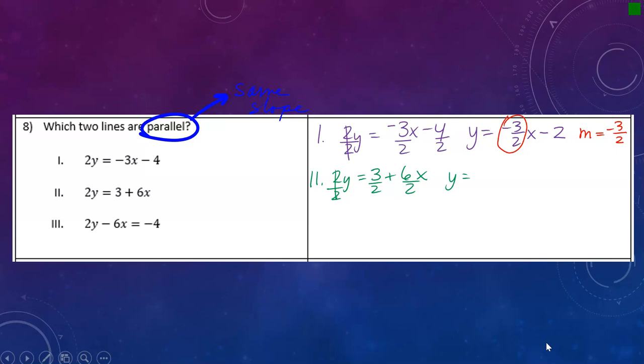I end up with y equals 3/2 plus 6 divided by 2, which is 3. So I'm going to write plus 3x. I'm looking at the number next to x, so I have a slope of 3.